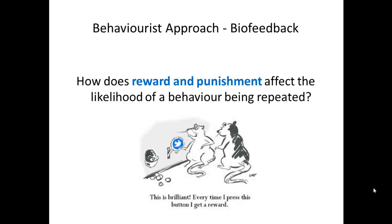Now we've looked at behaviourism before - we looked at it as part of the AAS course. How does reward and punishment affect the likelihood of a behaviour being repeated? We looked at two different types of conditioning: classical conditioning and operant conditioning as part of the AAS course, and we've also mentioned it as part of A2. The Big Bang Theory clip with Sheldon trying to condition Penny was an example of operant conditioning.